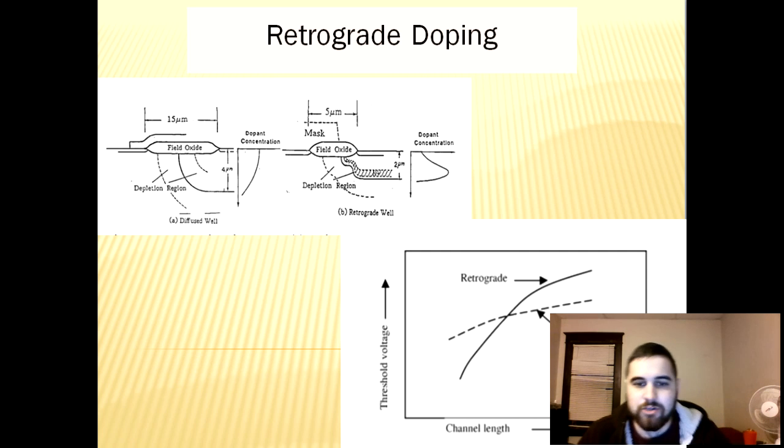Retrograde doping causes the threshold voltage to be decoupled from the gate controlled depletion width, but the body effect and sub threshold slope are still coupled to that same gate depletion width. Reduction in this gate depletion width will improve short channel effects but increase the sub threshold slope and the substrate sensitivity. Shown in the graph is the difference in channel length and threshold voltage between retrograde and super halo doping techniques.